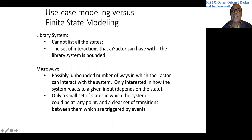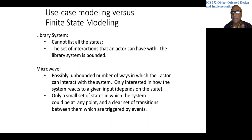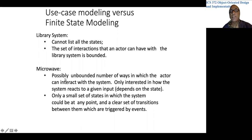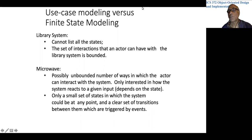This last slide summarizes the comparison between use case modeling and finite state modeling. For the library system, you cannot list all the states — the number of states is potentially infinite. But the ways in which you can interact with the system are limited. Whereas with the microwave, the number of states is not very large, but there is an infinite number of ways in which the user can interact with it. Those are the characteristics you should look for in a system to decide whether the use case model or the finite state machine approach is appropriate.